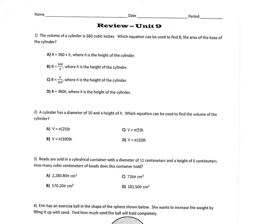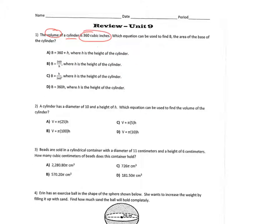Okay, number one. The volume of a cylinder is 360 cubic inches. Which equation can be used to find B, capital B, the area of the base of the cylinder? So what's the formula for volume of a cylinder?